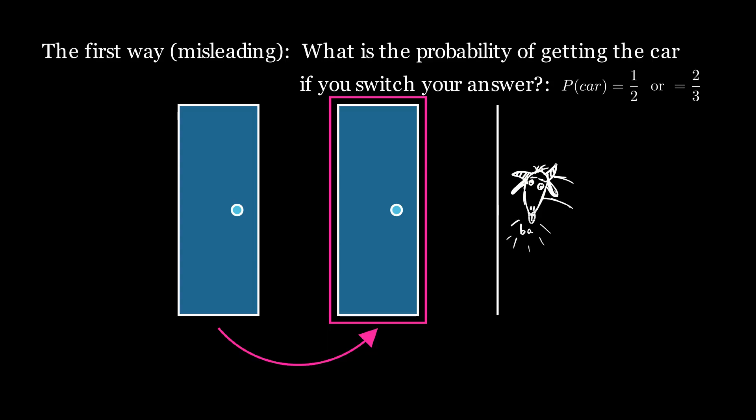So since the only event was the first door you picked there's a two in three chance of getting the car door in the end. This answer is still a little confusing but it's true. In fact both answers are correct. This is because the problem was presented in an ambiguous fashion.